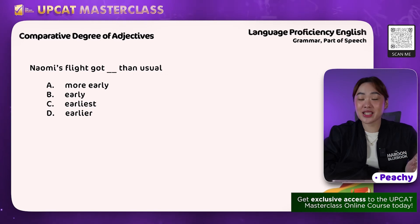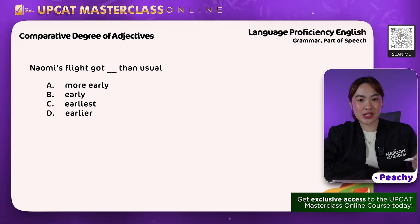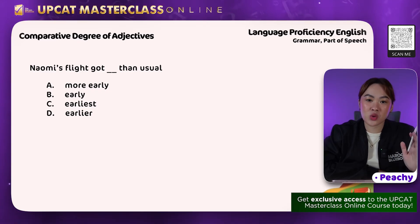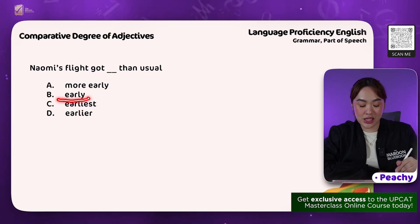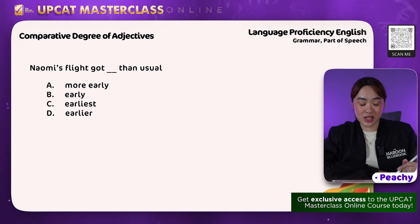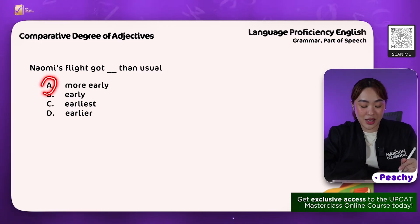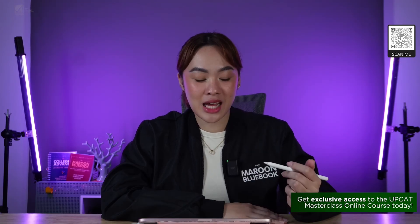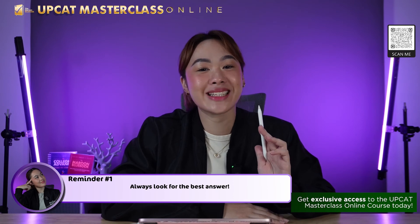Next item — we are looking at the comparative degree of adjectives. Our main clue is 'than usual,' suggesting there's something to compare to. The positive adjective here is 'early,' so we're looking at the comparative form. The correct answer is D — earlier. Some might answer A, 'more early,' and while it may be grammatically acceptable, the better answer is D — earlier. Take note that in the UPCAT, always choose only the best answer among the choices.